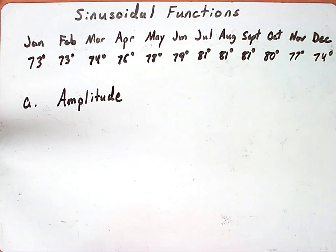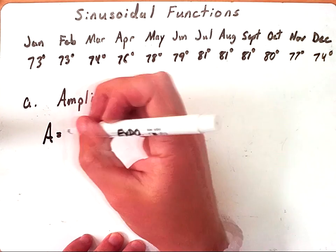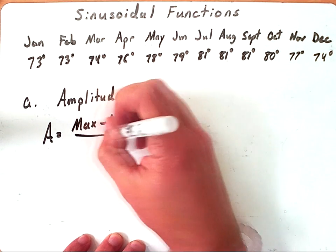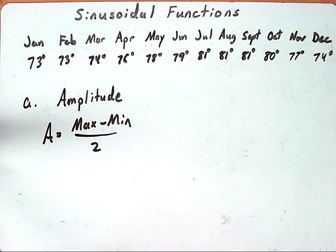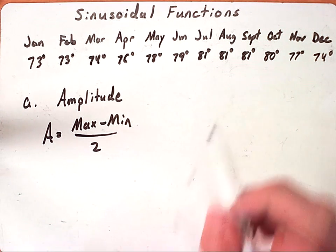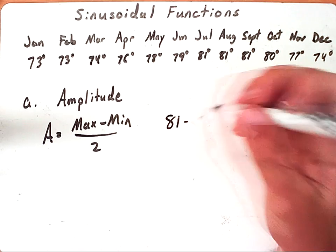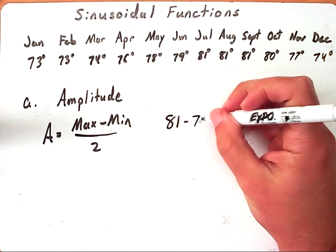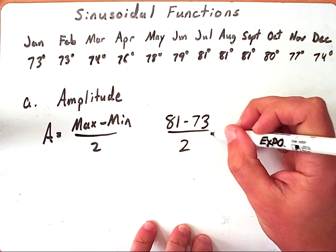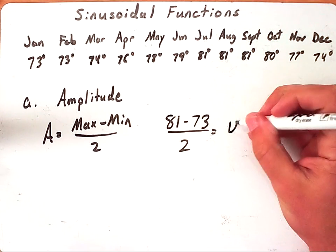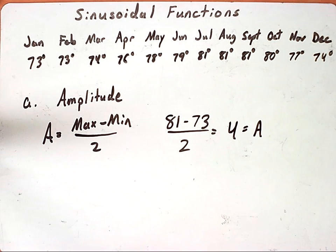The formula for finding amplitude if you have a data set is A equals the max minus the min over 2. So you're going to take the maximum value in your data set subtract the minimum value in your data set and then divide that by two. For Hawaii our maximum value is going to be 81, our minimum value is going to be 73, so that's a difference of 8 and 8 divided by 2 would give me 4. So 4 is going to equal my amplitude.